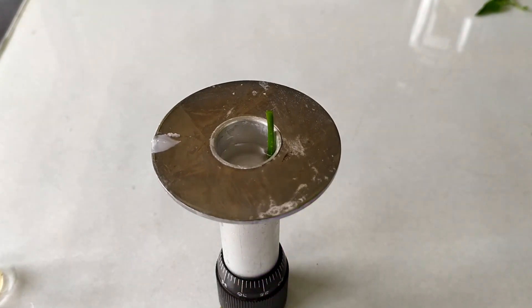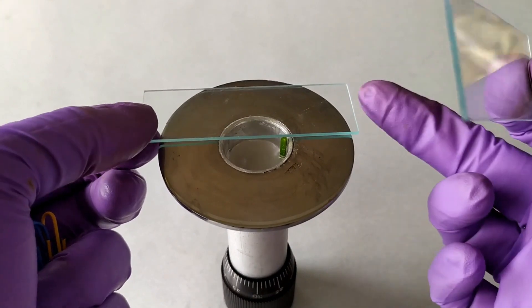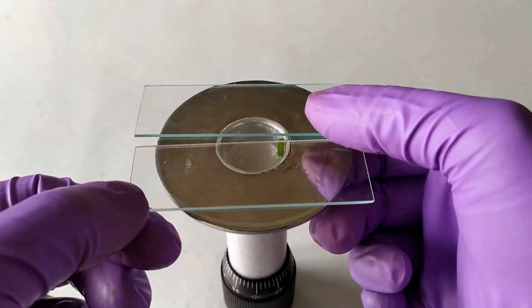Instead of using wax as support, you can also use a shallow piece of pith material such as carrot or potato instead. I have also come across a setup many years ago where someone had fastened two plain microscope slides on both sides of the sample compartment to act as the sectioning platform as you can see here.